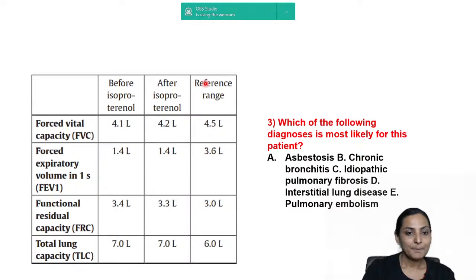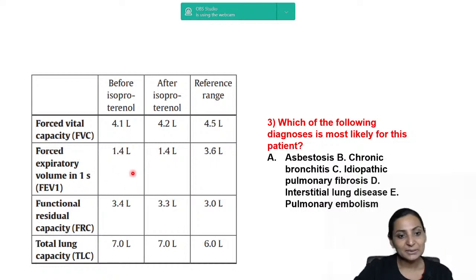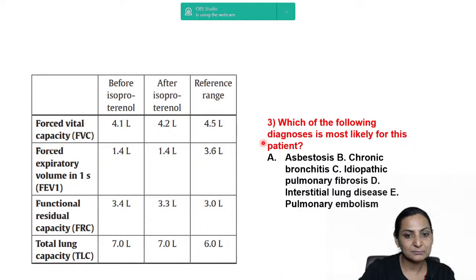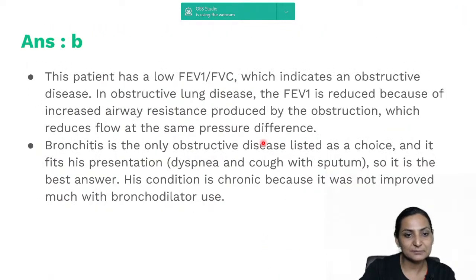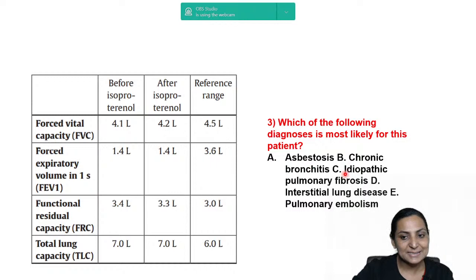Next: you've been given values before and after isoproterenol, with reference ranges for FVC, FEV1, FRC, and TLC. Calculate the values and determine which condition is most likely for this patient. The case is of restrictive lung disease. Which condition would be a restrictive lung disease — asbestosis, chronic bronchitis, idiopathic pulmonary fibrosis, interstitial lung disease, or pulmonary embolism?